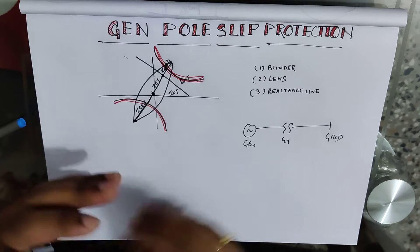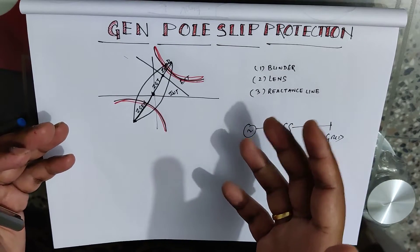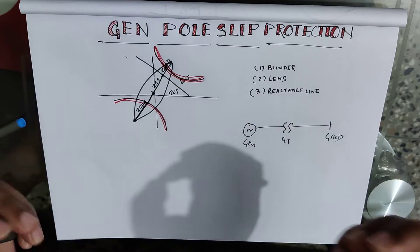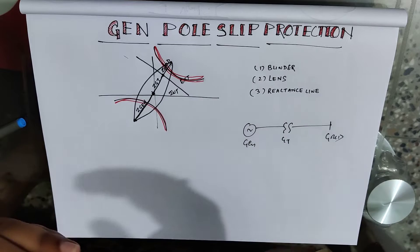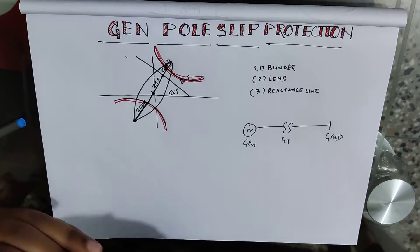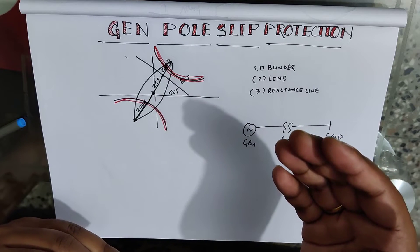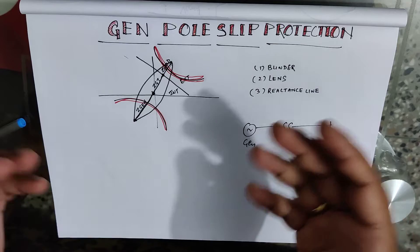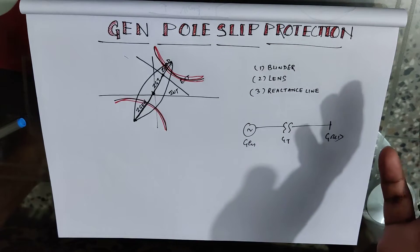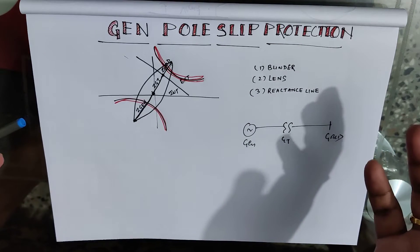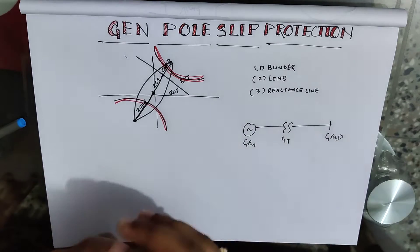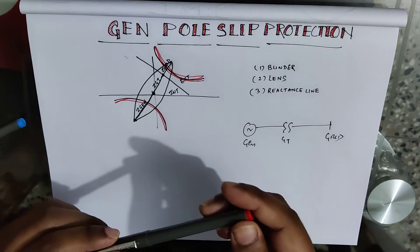If we do not isolate the generator which is experiencing the center of the power swing, this disturbance will propagate to the other power stations. After some time, all the power stations will collapse and result in a blackout condition, which is a very dangerous condition for the grid.